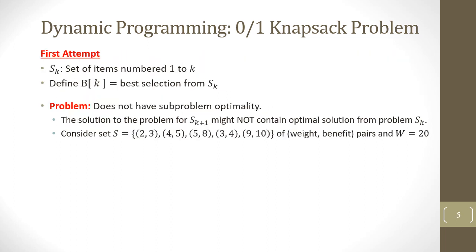Let's try to design a solution to the knapsack problem using dynamic programming. We are given a set of items numbered 1 to k. We define B(k) to be the best selection from the set which gives us the maximum benefit for the sub-problem of size k. So B(1) will be the smallest sub-problem containing only the first item, and B(2) will be the sub-problem containing the first two items, and so on. However, this selection of items based on item numbers to define a sub-problem does not lead to sub-problem optimality.